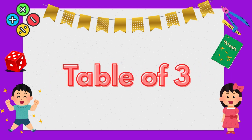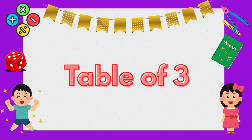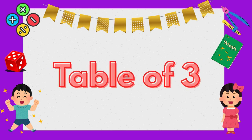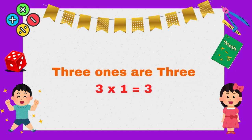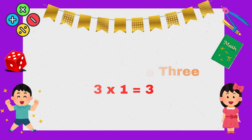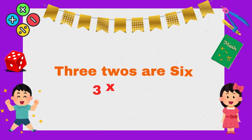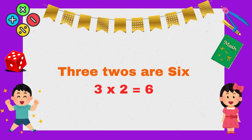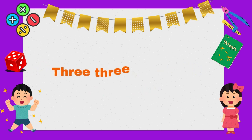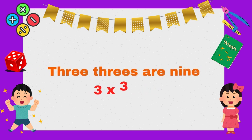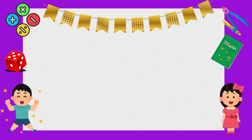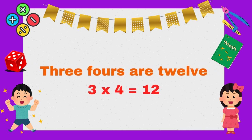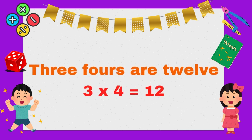Let's learn. Table of three. Three ones are three. Three twos are six. Three threes are nine. Three fours are twelve.